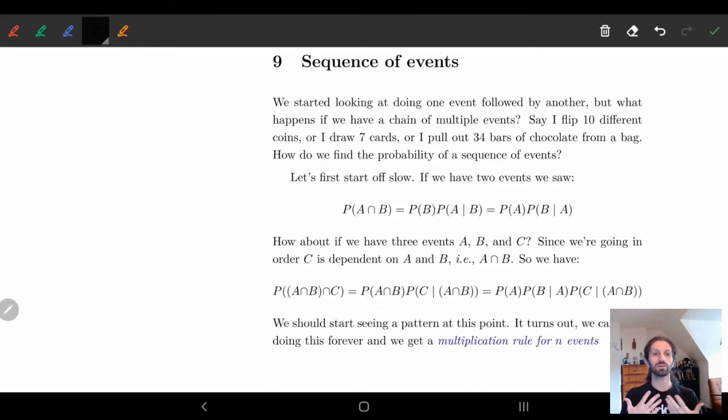Now what happens if we have multiple events? Say I flip 10 different coins, or I draw seven cards, or I grab 34 bars of chocolate out of a bag, something you do on a nightly basis. At least I hope I'm not the only one having 34 bags of chocolate on a daily basis. Life is exciting.